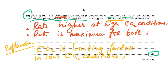If you write both comparison points without an explanation, you only get one mark. If it says compare and explain, there is one mark for the compare and one mark for the explanation. Rate is higher in high CO2 conditions; rate is maximum for both. The explanation is that CO2 is the limiting factor. In low CO2 conditions, if CO2 is less, that limits CO2 fixation in the Calvin cycle. CO2 is the limiting factor in low CO2 concentration.